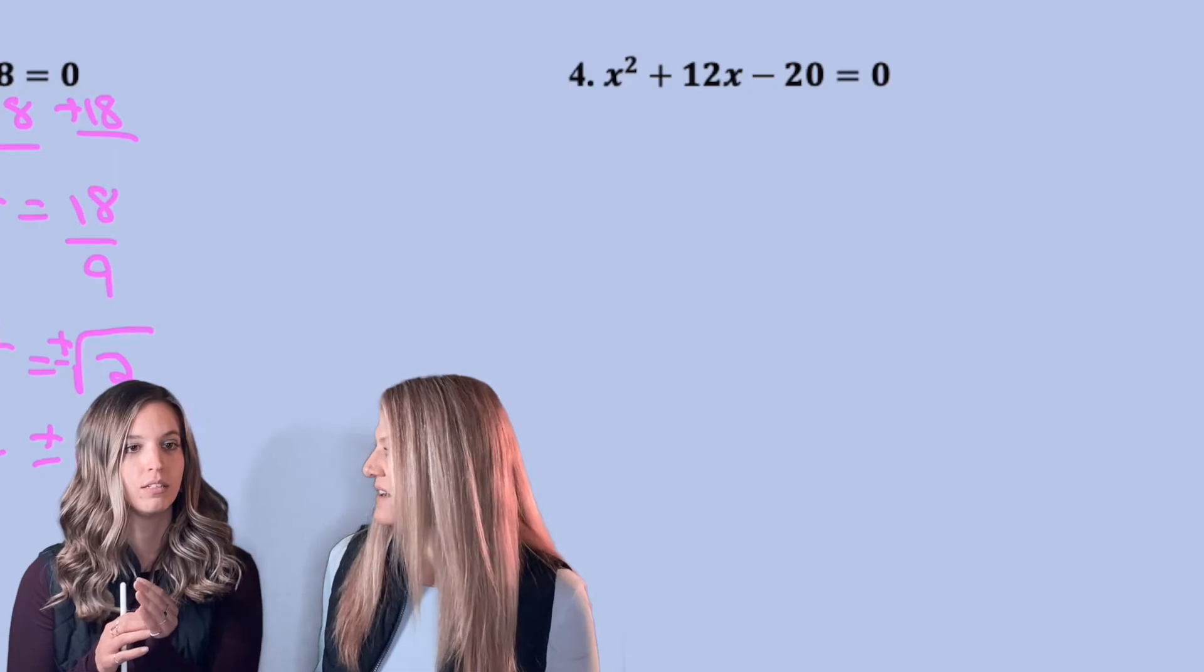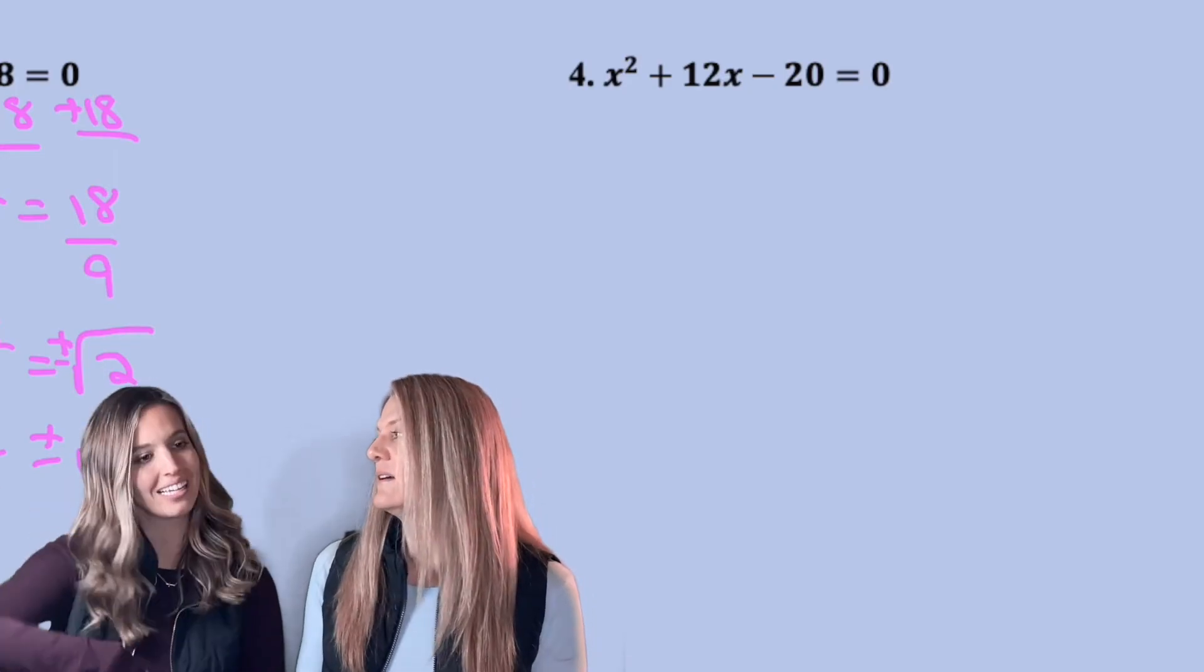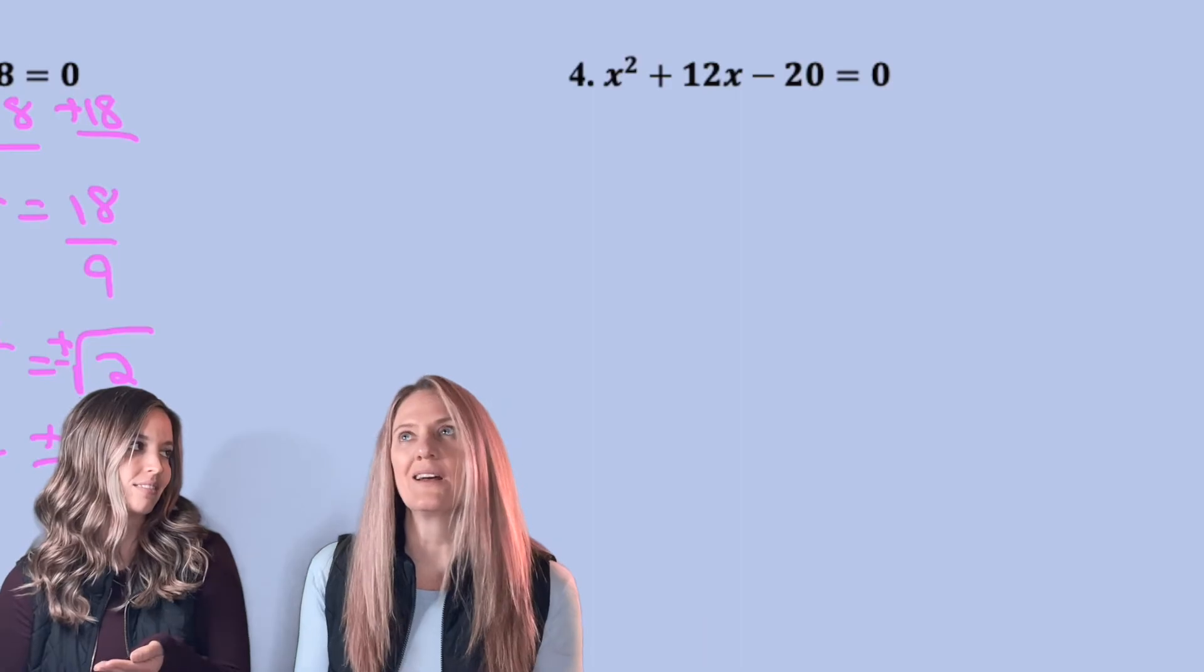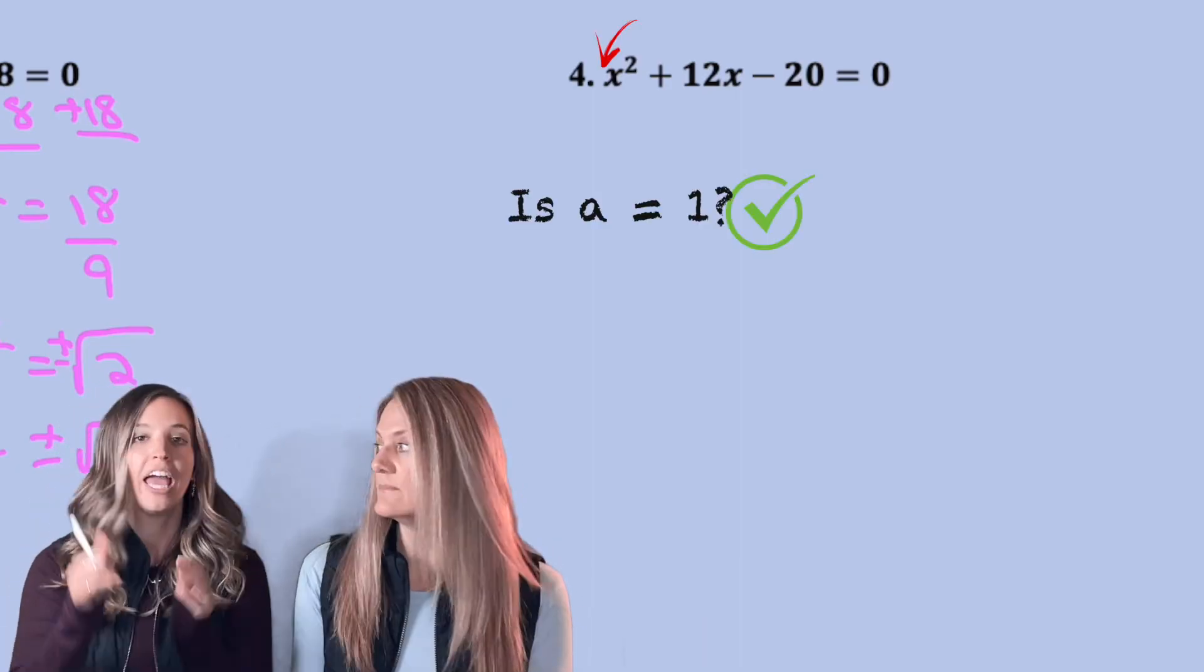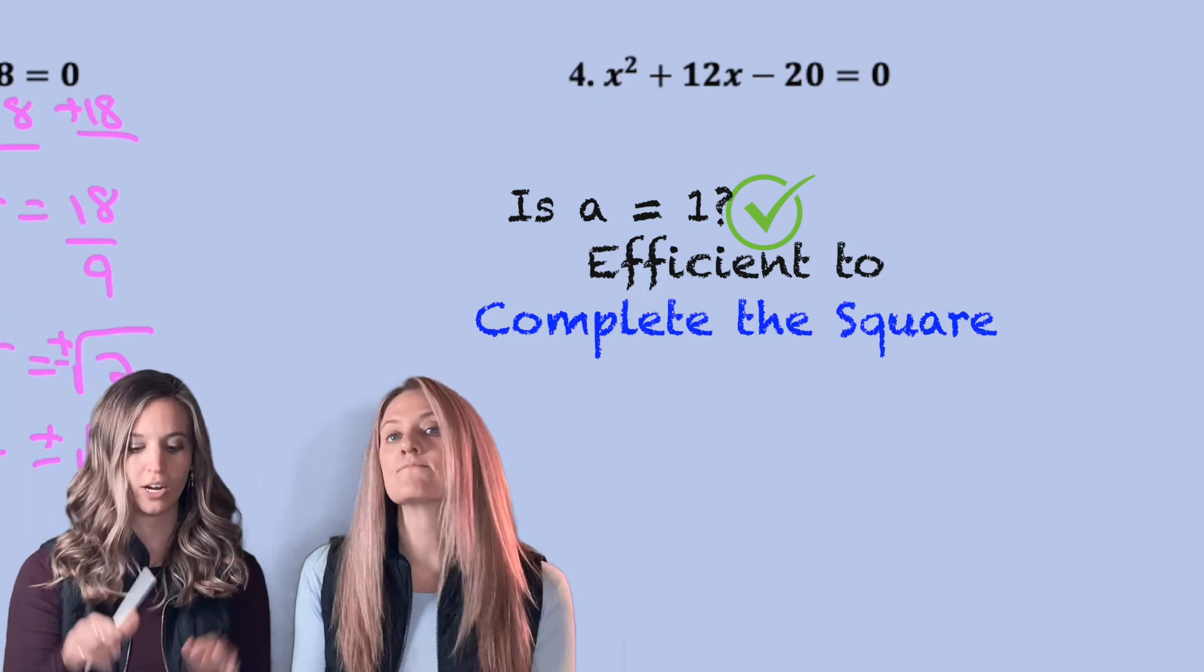But wait, what about two and ten? No, I want to add to a positive 12 and multiply to a negative 20. Oh, no, I can't do it. Okay. So, no factoring. I do have an A of one. It would be efficient here to complete the square. So, I'm going to complete the square.